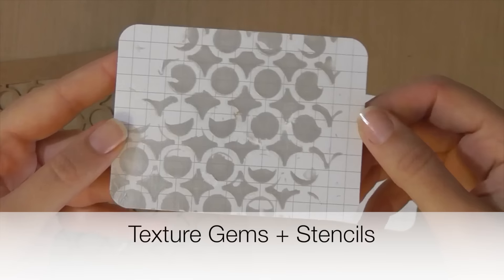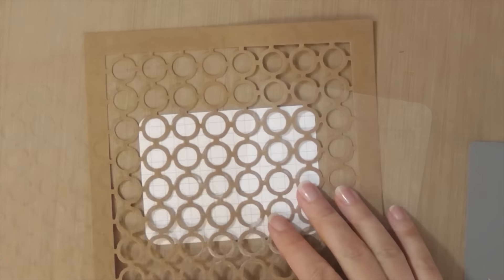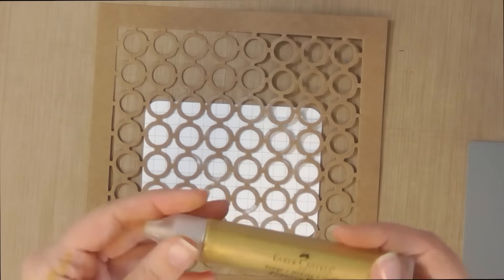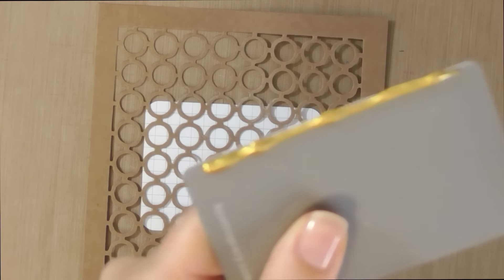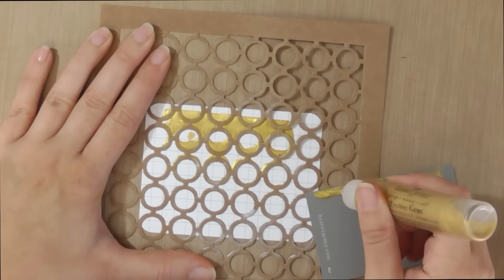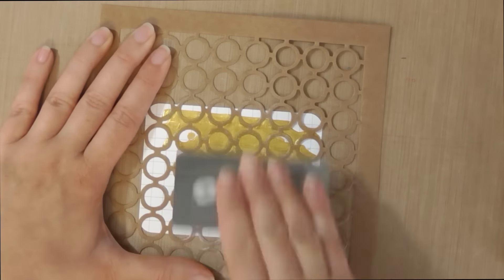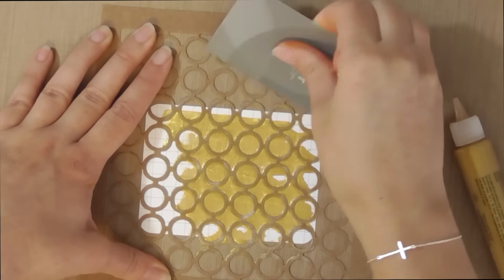One of my favorite techniques to use with texture gems is using it with stencils. Just take your paper and place your stencil over it. And I like to use a credit card or a hotel room key and just apply a bead of the texture gem right along the edge. And then I just kind of squeegee it down over the stencil.